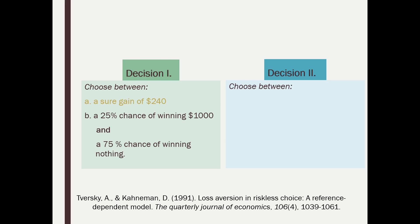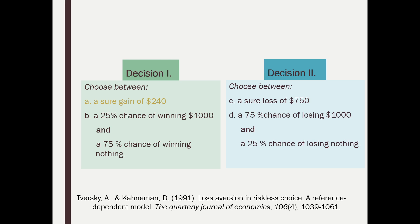Then they follow up with Decision Two: choose between a sure loss of $750 — meaning give me $750 — or a gamble with a 75% chance of losing $1,000 and a 25% chance of losing nothing. In this scenario, the average participant focuses on that 25% chance of losing nothing and goes with the gamble. Tversky and Kahneman were trying to figure out why statistically these are essentially the same basic decision, just inverted.